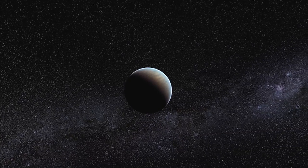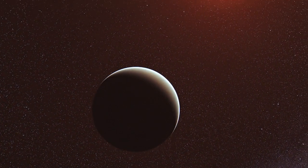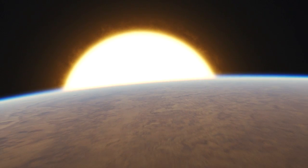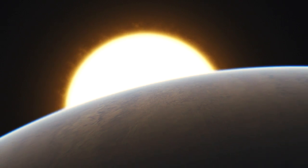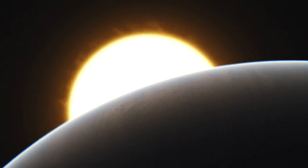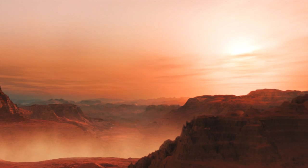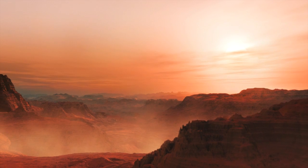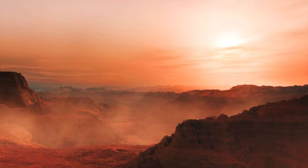Meet GJ 1214b, a super-Earth 2.6 times larger than our home planet. During transits, the planet's atmosphere partly absorbs the light of the parent star. ESO's FORS spectrograph revealed that GJ 1214b might well be a hot and steamy sauna world.